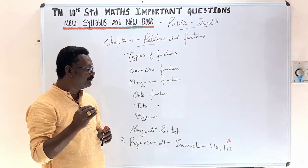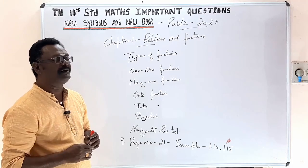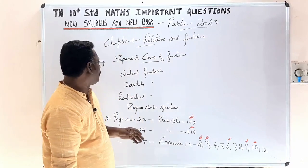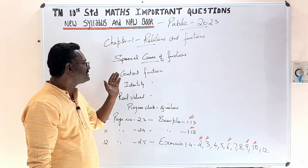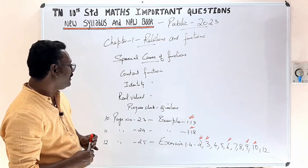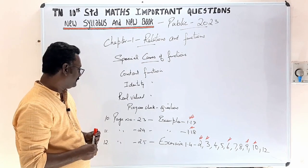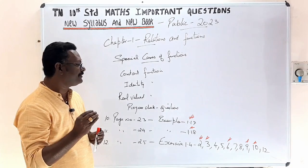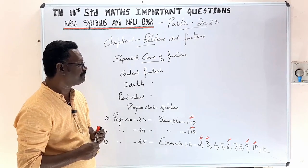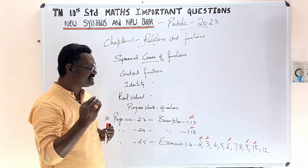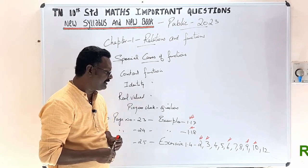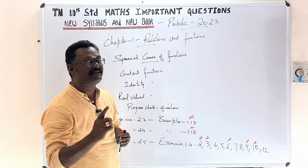Page number 21, examples 1.14 and 1.15 are very important. Page number 25, Exercise 1.4: 2nd, 3rd, 4th, 5th, 6th, 7th, 8th, 9th, 10th, and 12th sums are important. Among these, the 2nd, 3rd, 6th, 9th, and 10th sums are very very important.